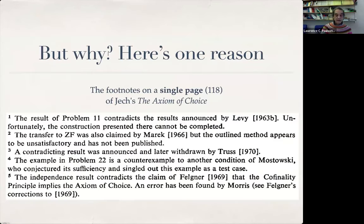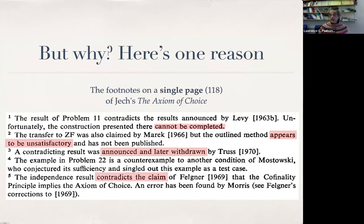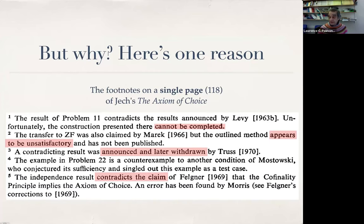Why do we do this? I always show this slide — the bottom of page 118 of The Axiom of Choice, where we have five footnotes describing five errors. When I do this, I am not trying to mock mathematicians. Rather, I'm appreciating that mathematics is incredibly complicated, especially today. This is not like Cantor's theorem, which although a very deep result has a very simple proof, or the Schröder-Bernstein theorem — again, a very important result with a very simple proof. We don't live in those times anymore. Things are incredibly complicated, and software can help.